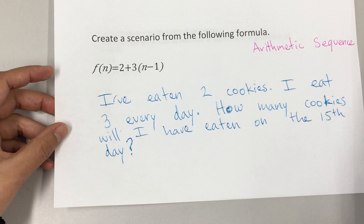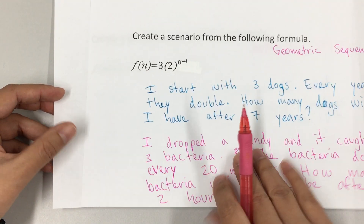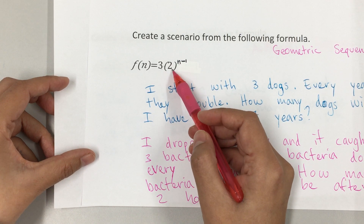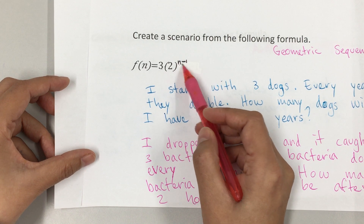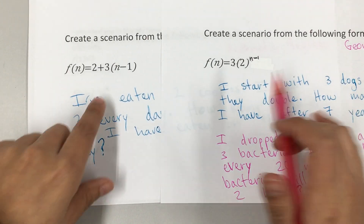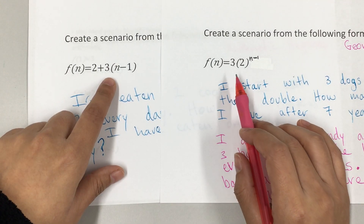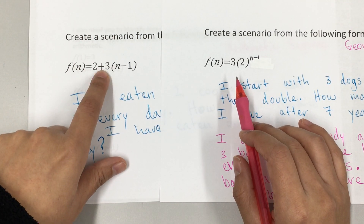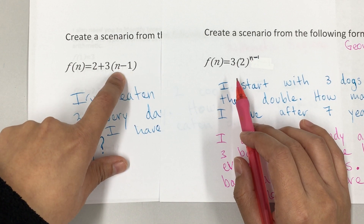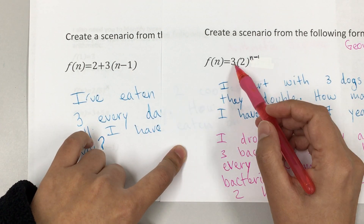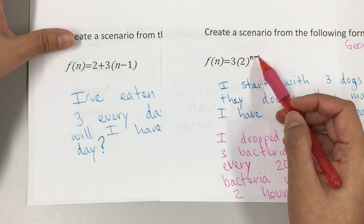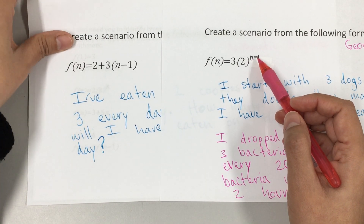For geometric sequences you have the initial point, you're multiplying, and n minus 1 is an exponent — not a factor. For arithmetic: addition or subtraction, with n minus 1 as a factor. For geometric: multiplication, with n minus 1 as an exponent.